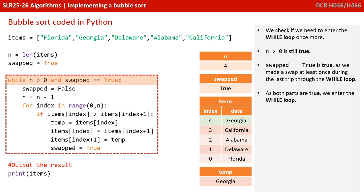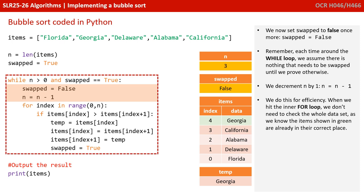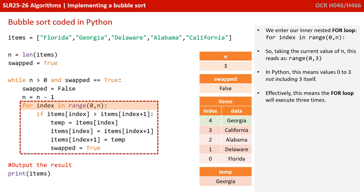We check if we need to enter the while loop once more: n is greater than 0 is still true, and swapped equals true is true — we made a swap at least once during the last trip through the while loop. As both parts are true, we enter the while loop again. We set swap back to false and decrement n by 1 for efficiency — when we hit the inner for loop, we don't need to check the whole dataset, as we know the items already shown in green are in their correct place. We enter the inner nested for loop for index in range 0 to n — that's 0 to 3 — meaning the inner for loop will now execute 3 times instead of the previous 4.